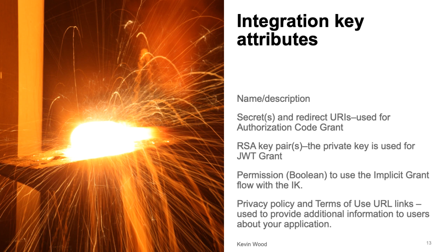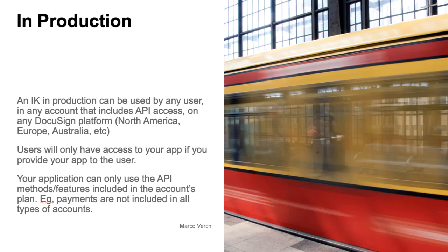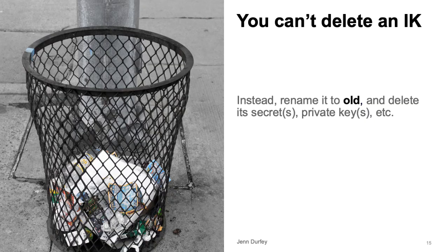Integration keys have many attributes and more may be added in the future. You can view and update an integration key's attributes by using the administration tool on the key's management account. An IK in production can be used by any user in any account that includes API access on any DocuSign platform — North America, Europe, Australia, etc. Users will only have access to your application if you provide your application to the user. Your application can only use the API methods and features included in the account's plan. For example, payments are not included in all types of accounts. You cannot delete an IK; instead, rename it to old and delete its secrets, private keys, etc.